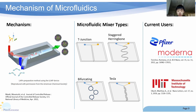In summary, microfluidics harnesses the principles of chaotic mixing through micromixers, enabling efficient and controlled fluid manipulation at the micro scale. This technology finds applications in various fields, including nanoparticle formation for drug delivery systems. With further advancements and understanding, microfluidics holds the potential to revolutionize pharmaceutical and biotechnological research and development.